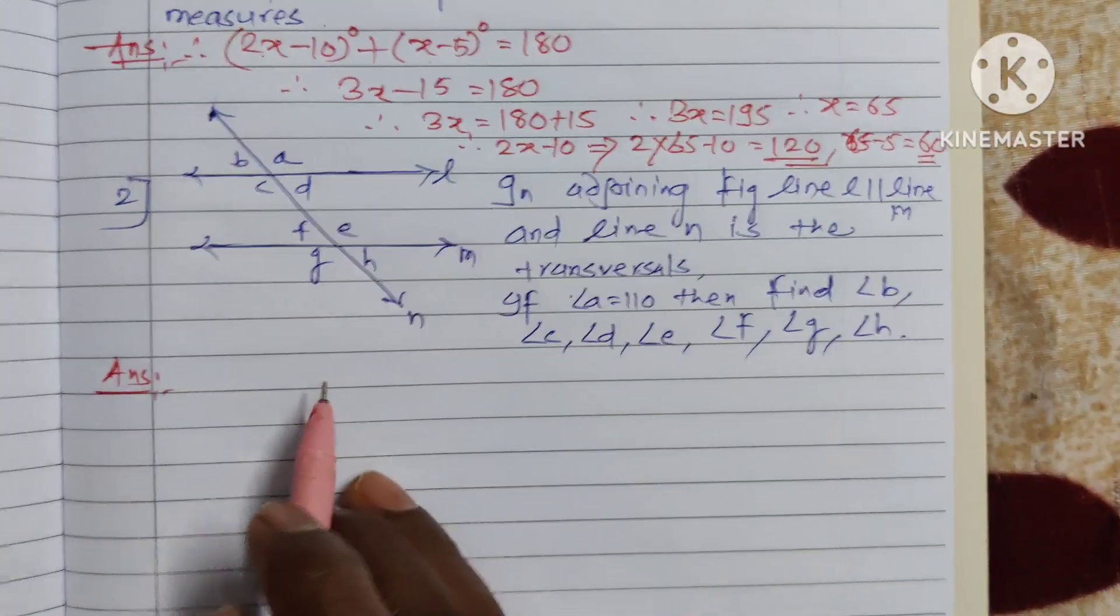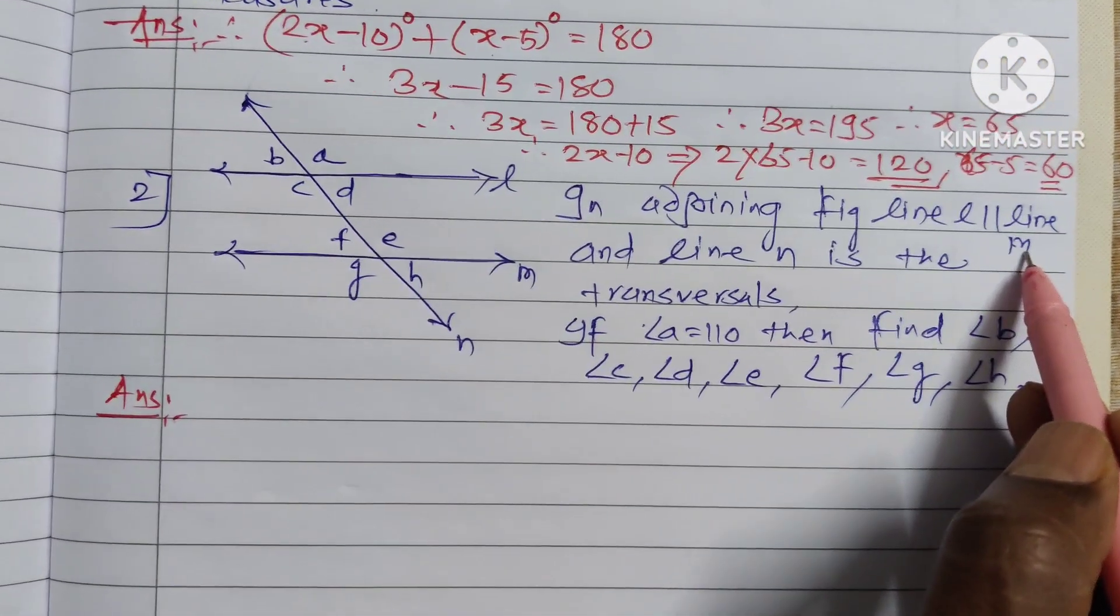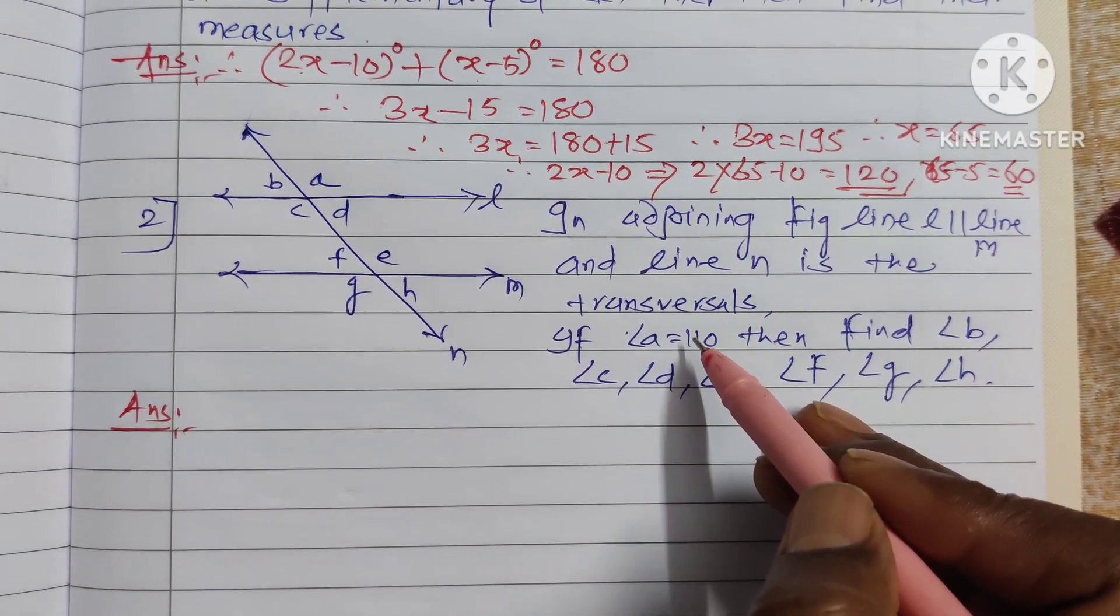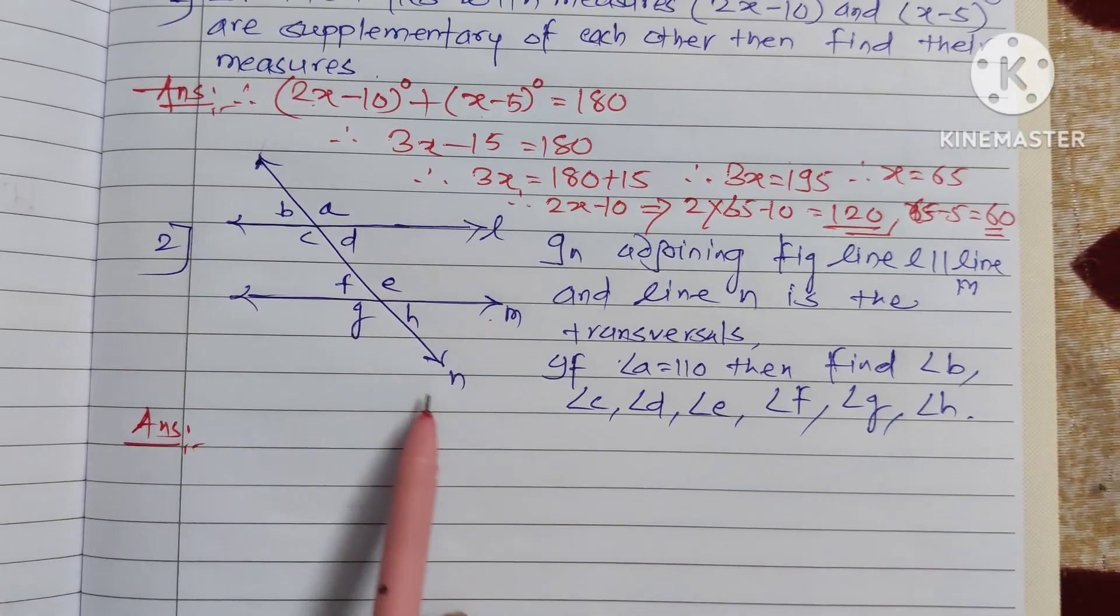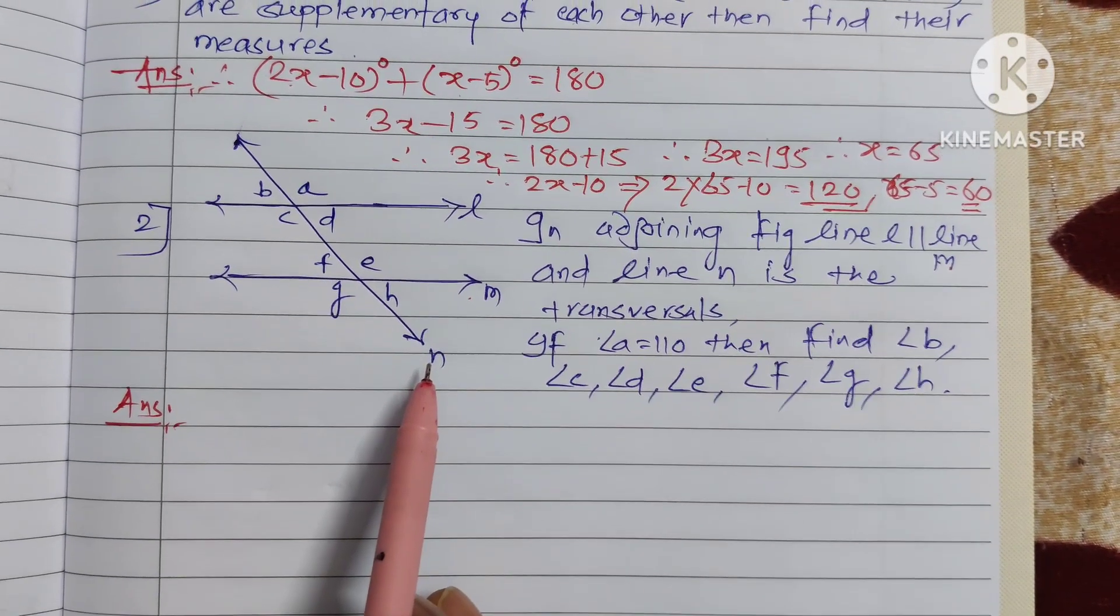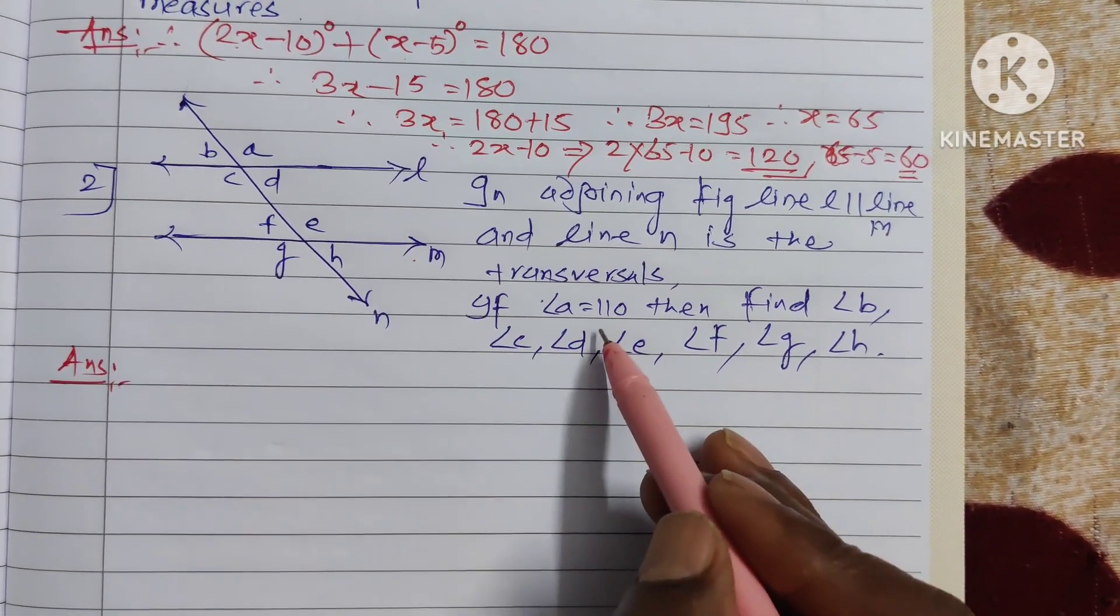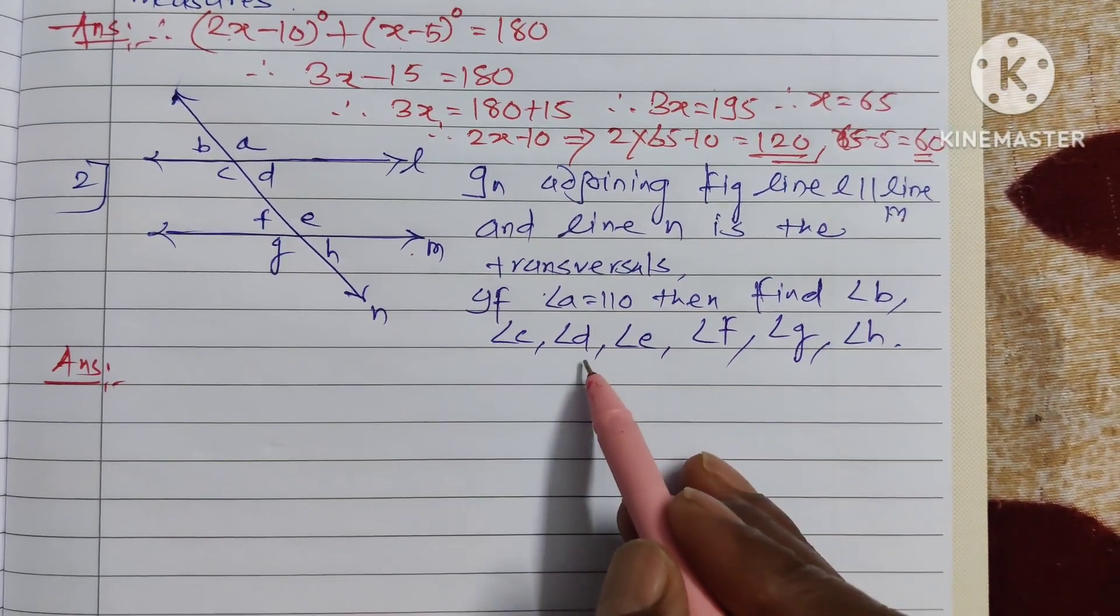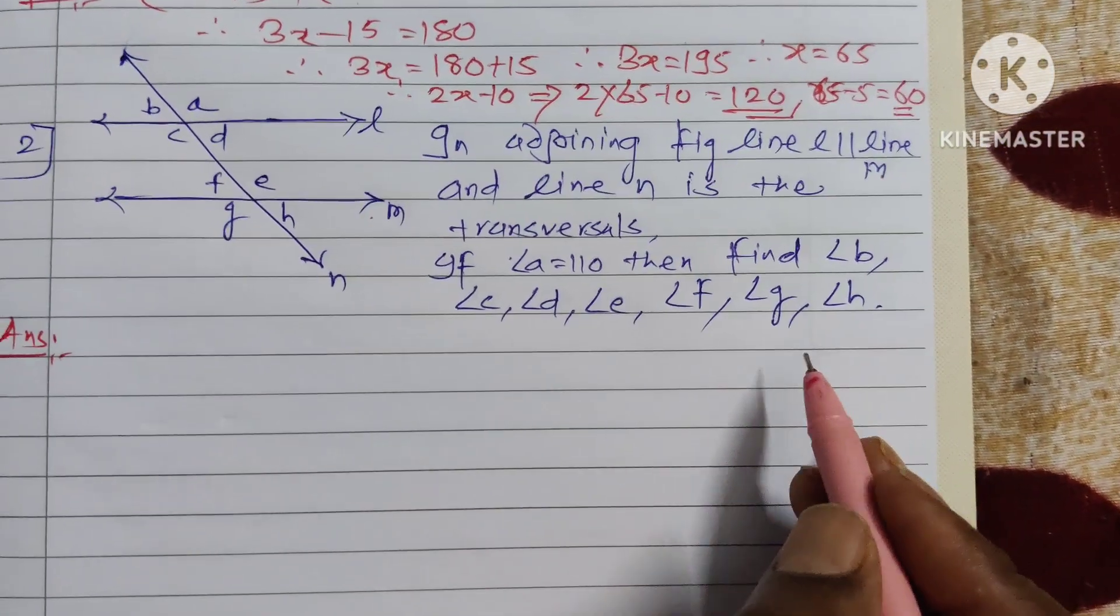Now another question: In the adjoining figure, line l and line m are parallel lines and line n is the transversal. If angle a equal to 110, then find angle b, angle c, angle d, angle e, angle f, angle g, and angle h.